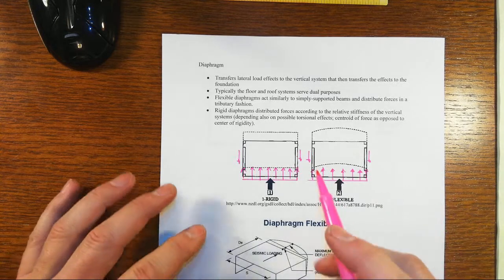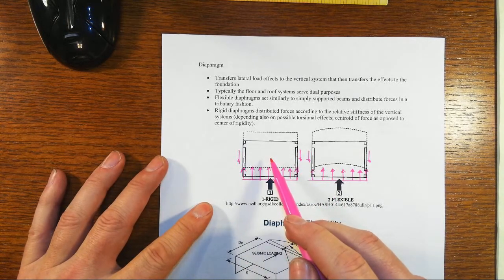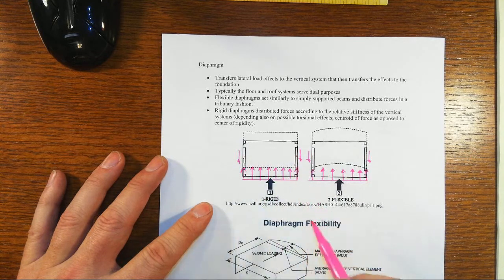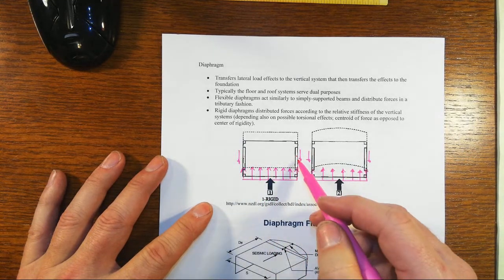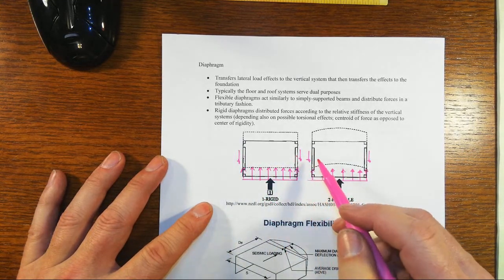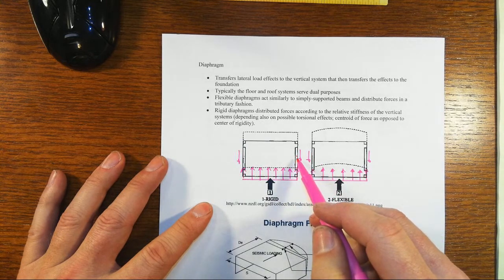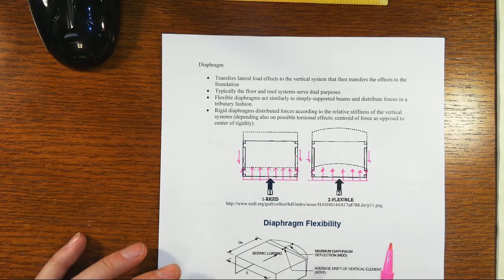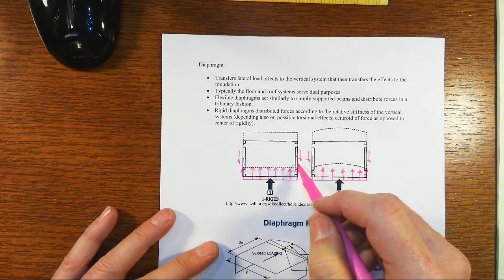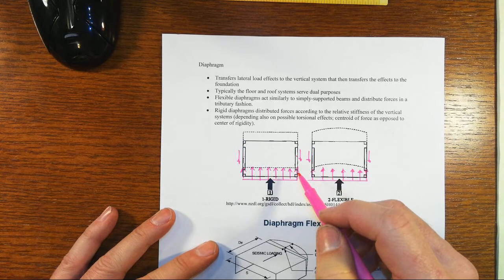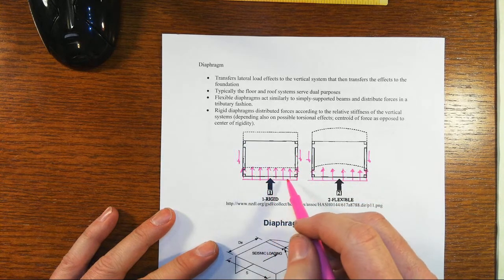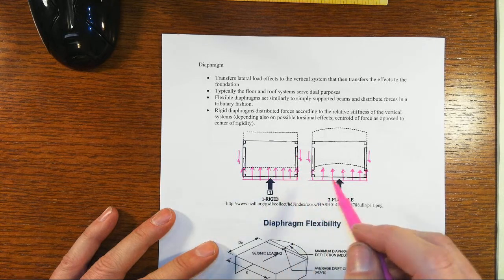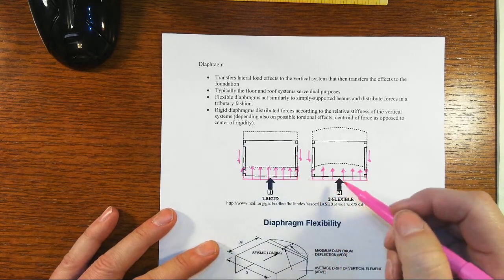Now, before I get into a little bit more of that, big picture here, the rigid diaphragm is going to transfer forces according to the relative stiffness of the vertical elements, whether they be the shear walls or the brace frames or whatever. If these vertical systems are identical to each other in all kinds of really important ways that we'll talk about another time, then that will alter how this sort of beam responds and then transfers the forces.